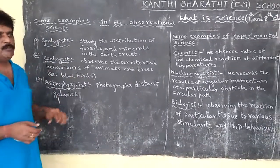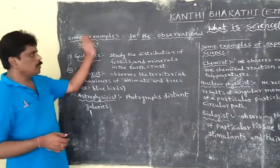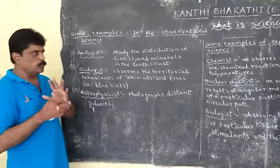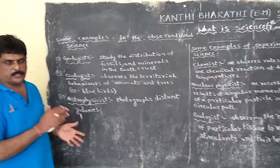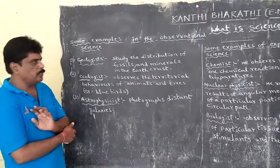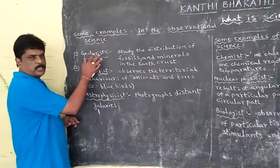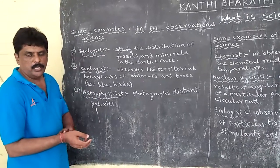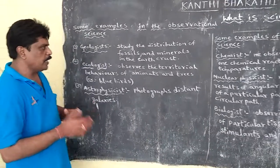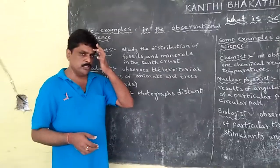I have given some examples for you for observational science and some experimental science also. The first example I have written is geologists. What is the meaning of geologists? They are working on the study of distribution of fossils and minerals in the earth's crust — these are called geologists.